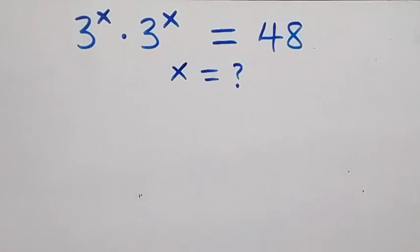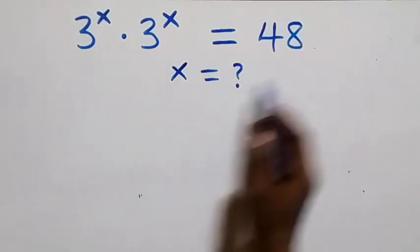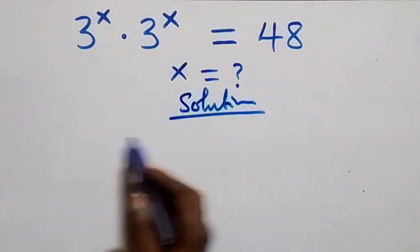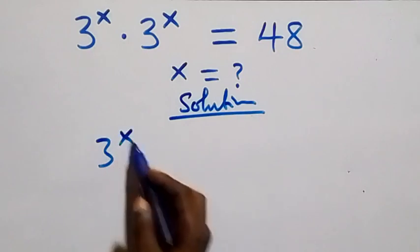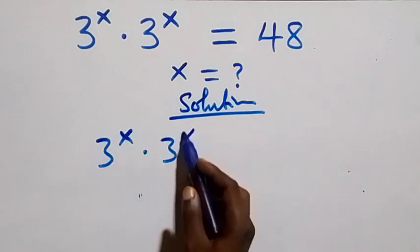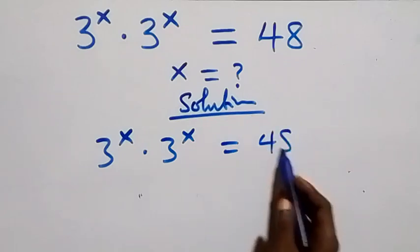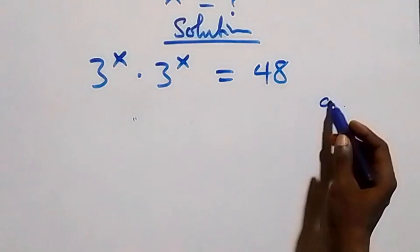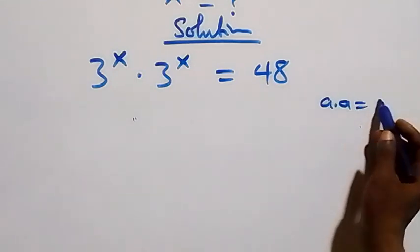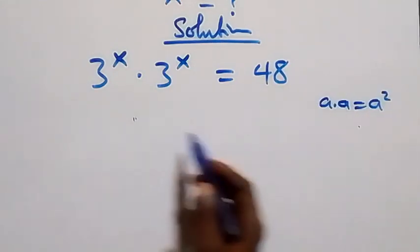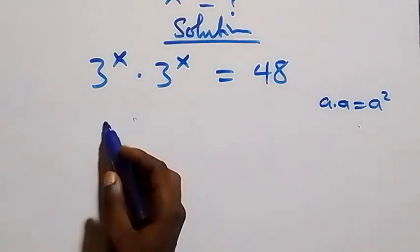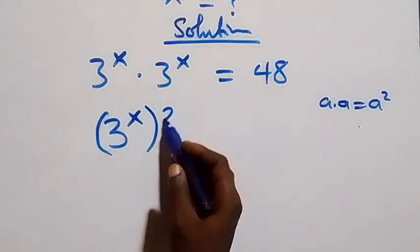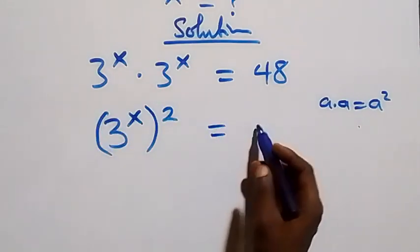Hello, you are welcome. How to solve this nice exponential equation. From what we have, which is three raised to power x times three raised to power x equals to forty-eight. This follows from when we have a times a, which can be written as a squared. Then what we have here can also be written as three raised to power x, then raised to power two, equals to forty-eight.